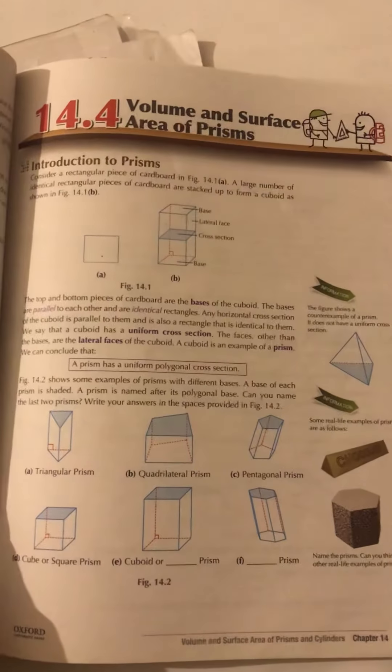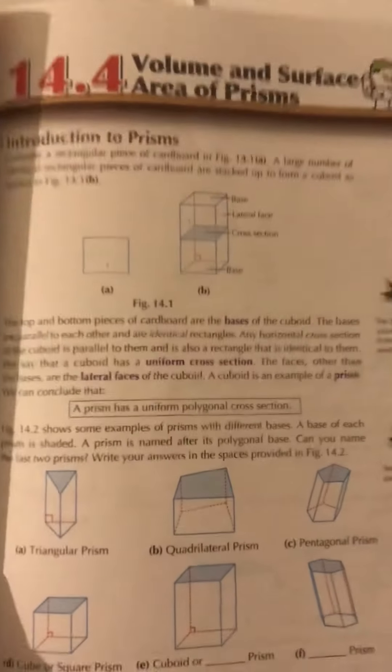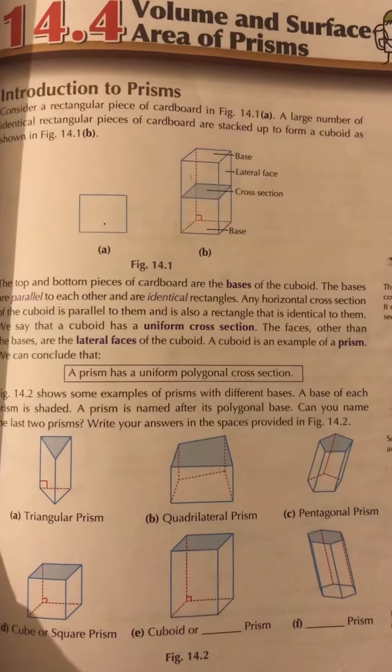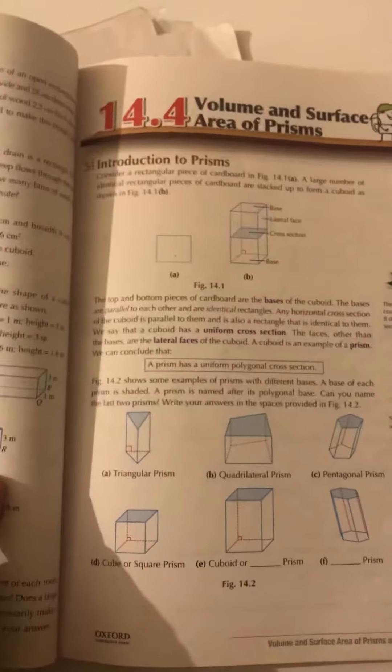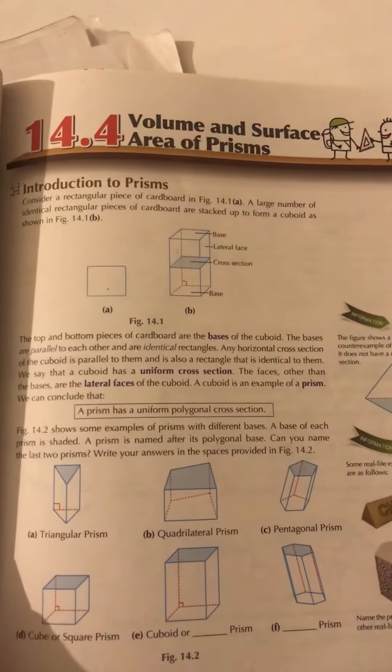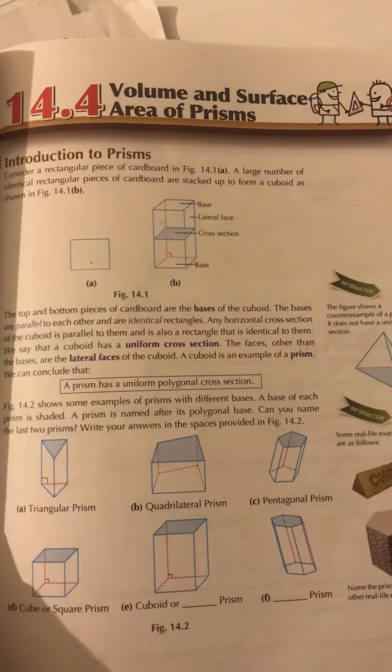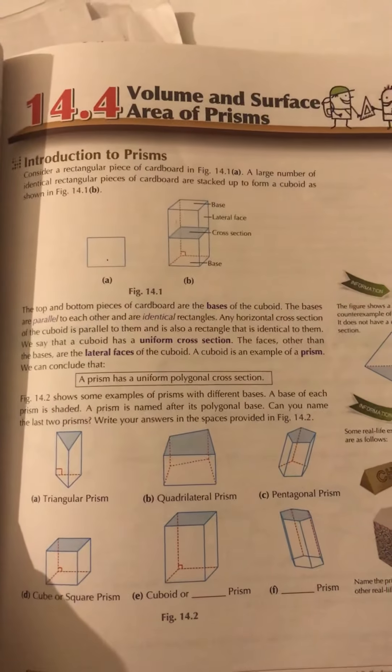Now see, let's read this caption which is written in the box: a prism has a uniform polygonal base. What does this mean? A prism has a uniform - uniform means same, yes, as you wear the same uniform as you visit the school regularly.